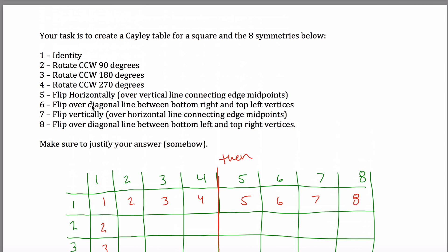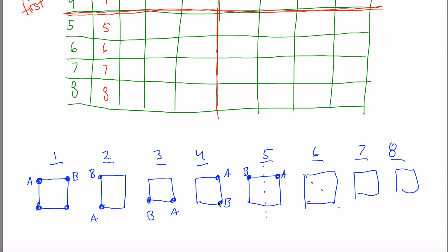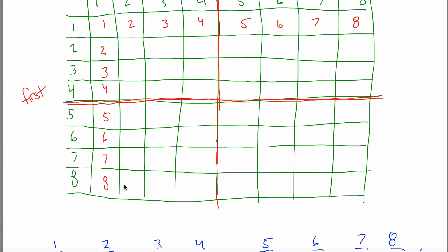6 says reflect over the diagonal line between bottom right and top left. If I start with A here and B here, A stays exactly where it was because this goes here and this goes here — so the B that was here jumps down here. Then 7 flips over the horizontal line: A starts here and moves down, B starts here and moves over. For 8, flipping over the other diagonal leaves B fixed and A jumps down here. Tracking A and B is enough to compose these symmetries.